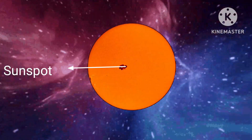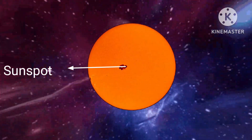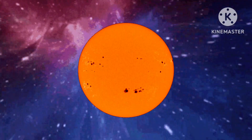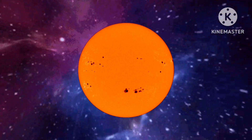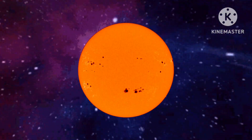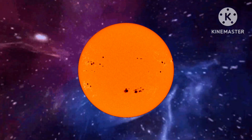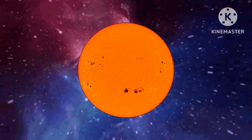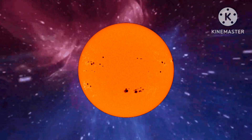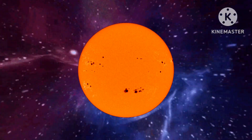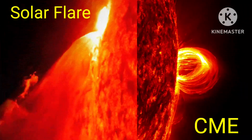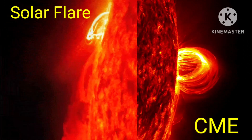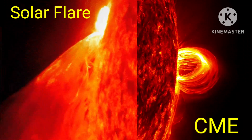The solar cycle affects activity on the surface of the sun, such as sunspots. When the sun has the most number of sunspots, it means the sun is in the middle of the solar cycle, also known as solar maximum. These sunspots indicate intense magnetic activity. Most solar flares and coronal mass ejections originate from these active regions.